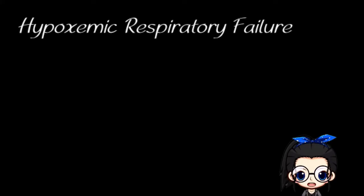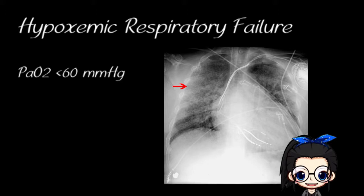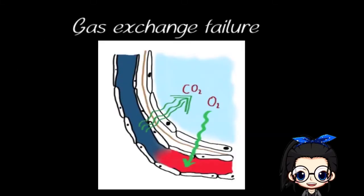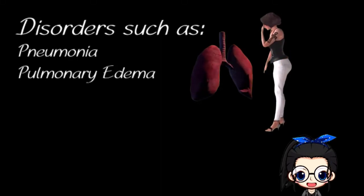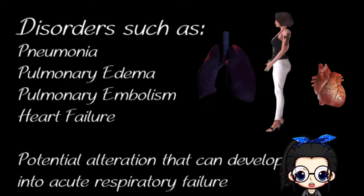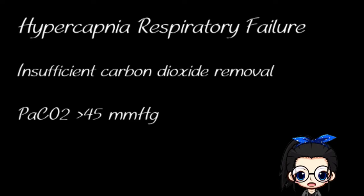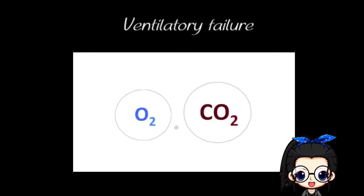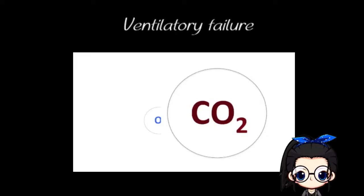Acute respiratory failure can be classified as hypoxemia or hypercapnia. Hypoxemic respiratory failure is commonly defined as the partial pressure of arterial oxygen less than 60 mmHg, also known as gas exchange failure. Disorders such as pneumonia, pulmonary edema, pulmonary embolism, and heart failure are examples of potential alterations that can develop into acute respiratory failure. The primary problem in hypercapnic respiratory failure is insufficient carbon dioxide removal, as the partial pressure of arterial carbon dioxide is greater than 45 mmHg, otherwise known as ventilatory failure, where the client is unable to effectively remove carbon dioxide.